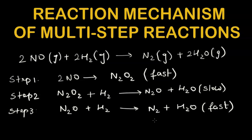The labels fast, slow, and fast indicate the speed of each step. Step 1 is fast, step 2 is slow, and step 3 is fast. We care about this because we are studying reaction rates, and rate is simply the speed at which a reaction takes place.